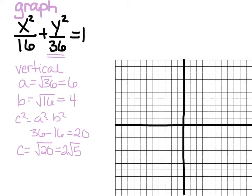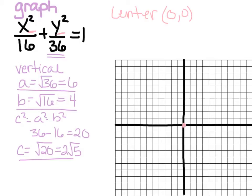Now that we've got A, B, and C, we can graph this. All we need to do is locate the center. Center is always at H, K. We don't have an H or K here, so our center is at 0, 0. In the Y direction, we're going to go 6 units up and 6 down and put our vertices. Those points are at (0, 6) and (0, negative 6), so I'll write plus or minus to save space.